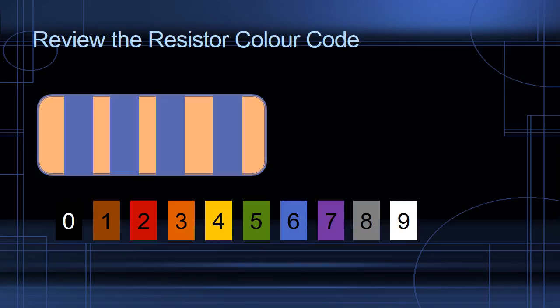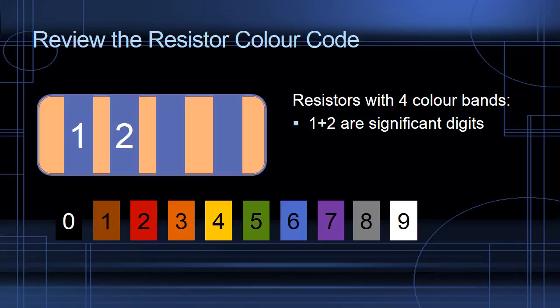Let's first review the resistor color coding system. On a four band resistor, the first two are significant digits, the third is the multiplier, and the fourth is the tolerance.